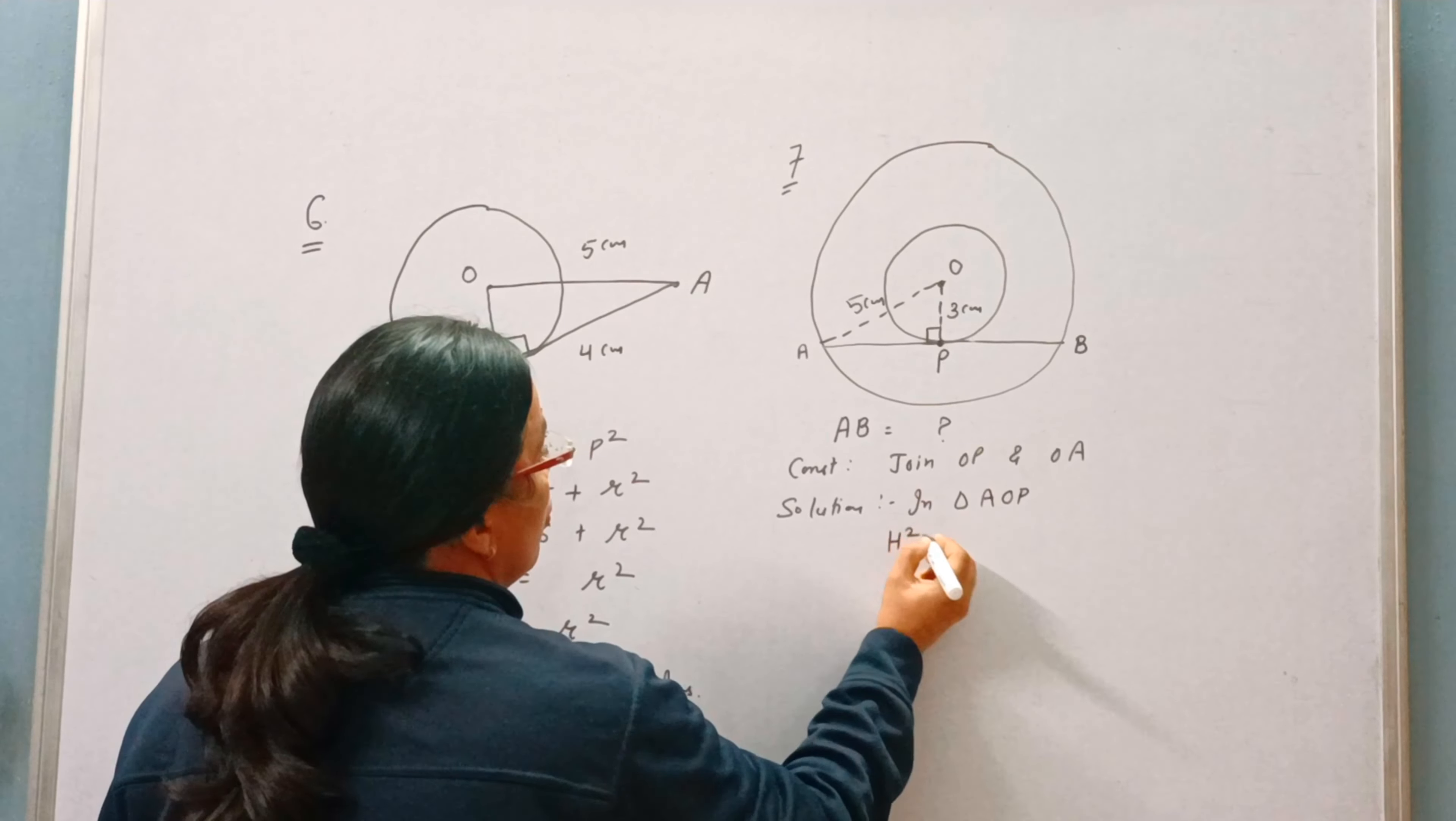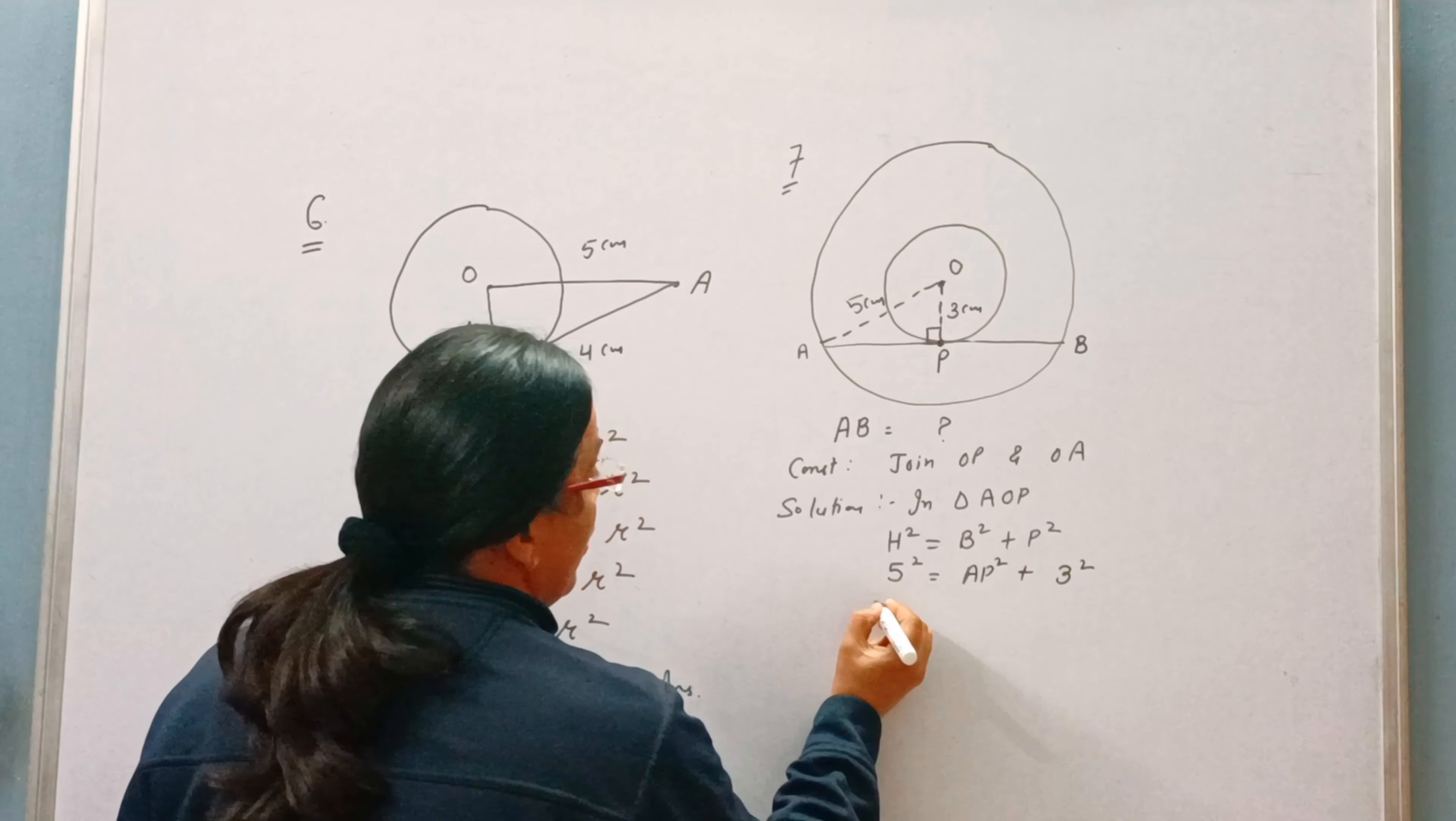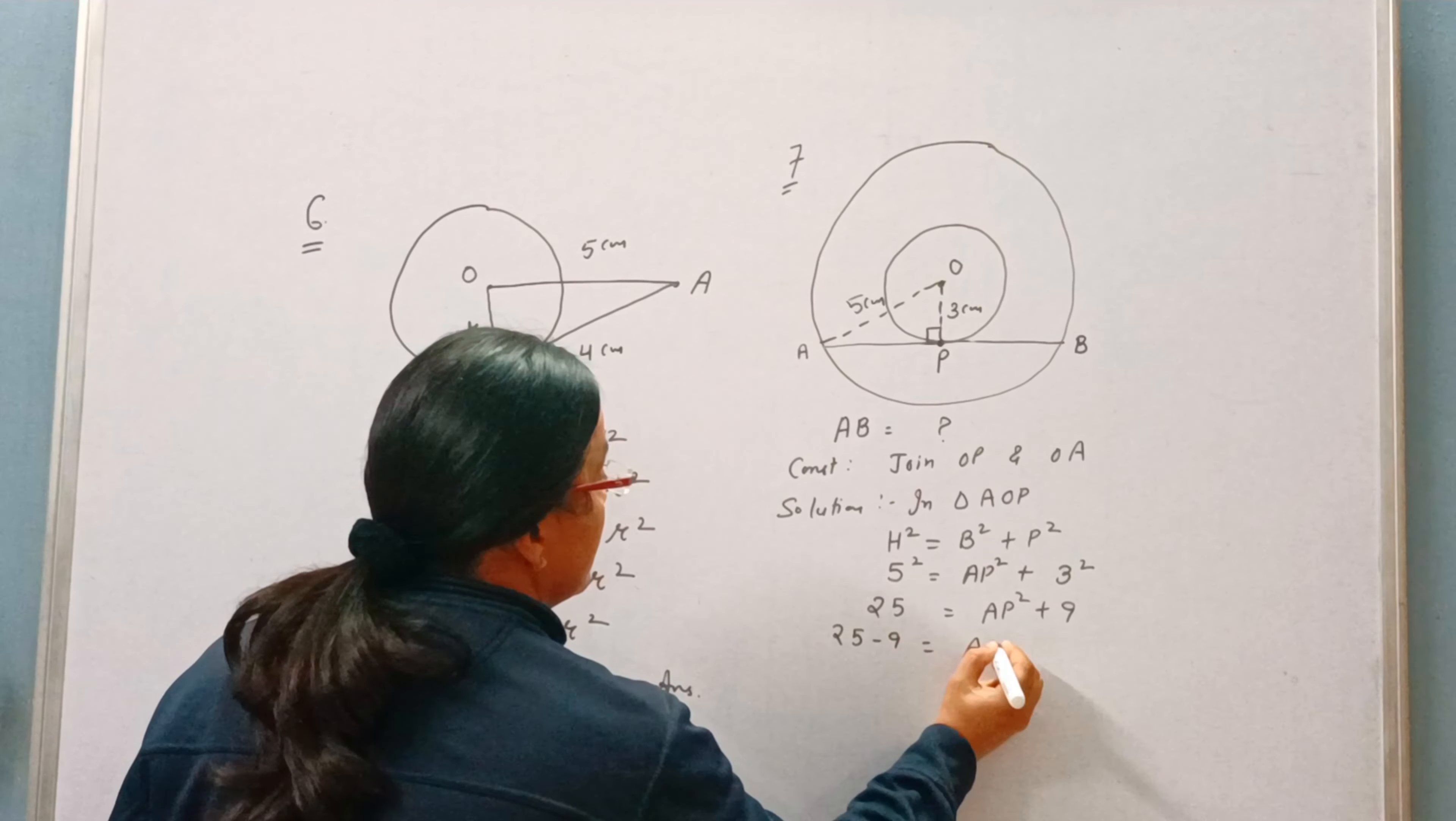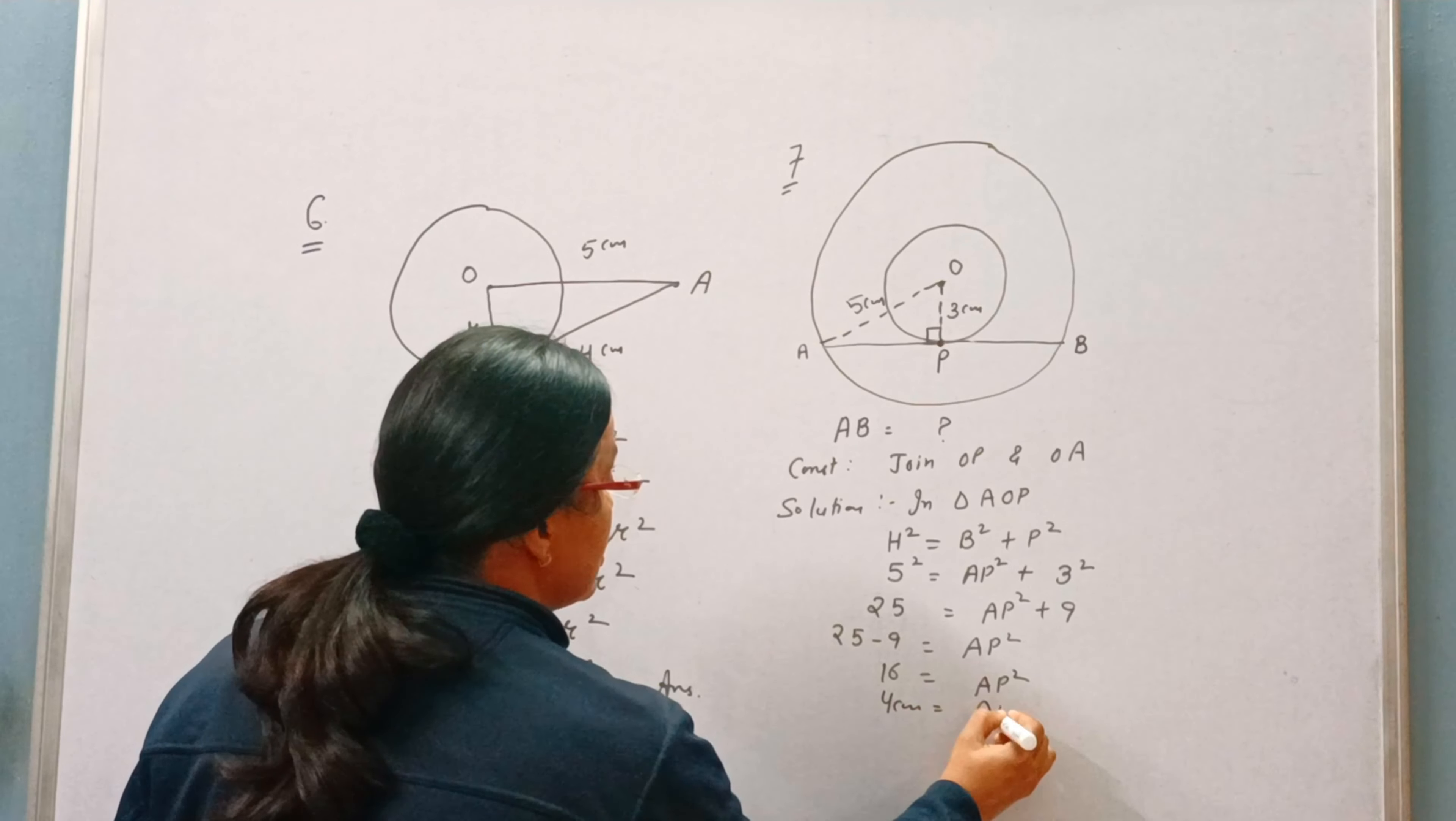H² = B² + P². H is 5, base we need to find, that is AP, and perpendicular is 3. 5 × 5 = 25, 3 × 3 = 9, 25 minus 9 is 16. So AP will be 4 cm.